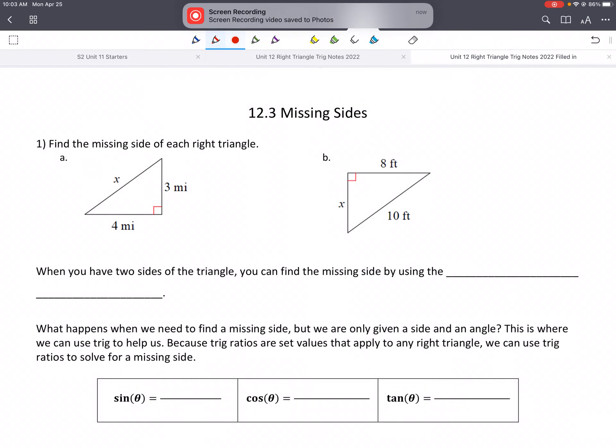All right, everybody, this is 12.3, missing sides. So here are two examples where we have two sides that are missing. We used this already in 12.1 using the Pythagorean Theorem. So the Pythagorean Theorem, a squared plus b squared equals c squared. And we can do that again, or you can go back to 12.1, maybe just to keep the video short.